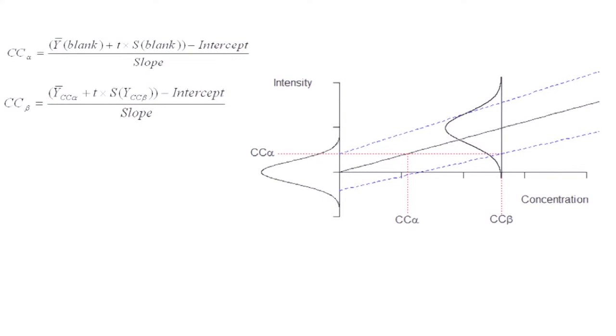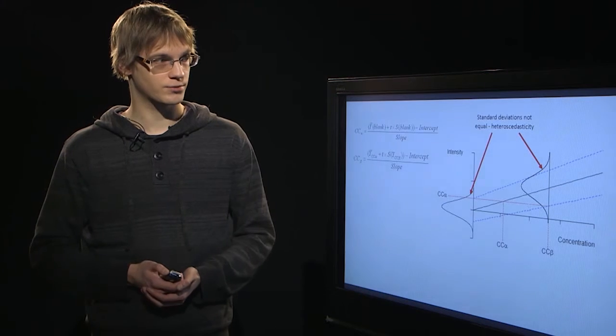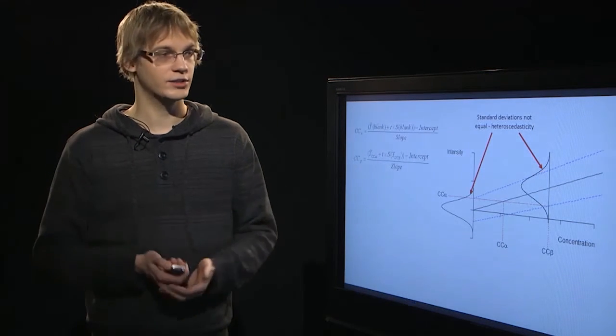Here there is a problem because we can see from this graph that the standard deviations at each concentration might not always be the same. This is actually quite common in analytical chemistry: as the concentration grows, the standard deviation also grows. This is called heteroscedasticity.